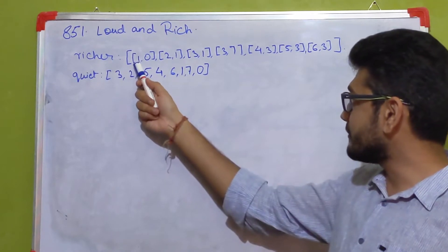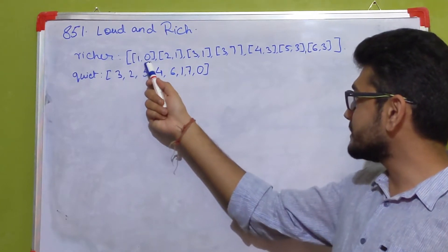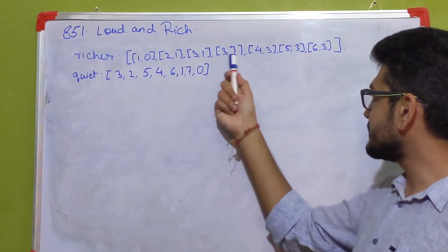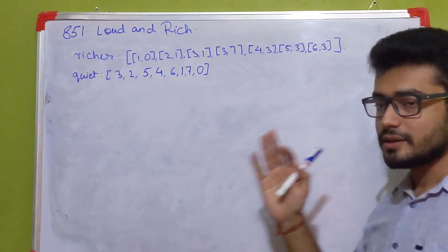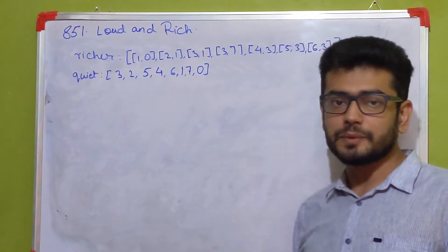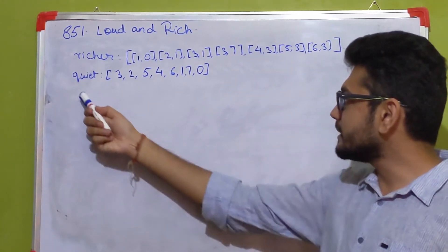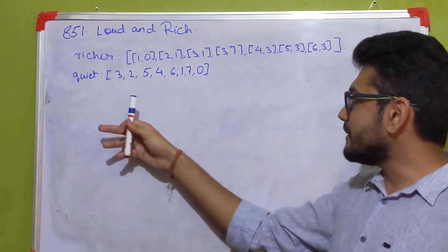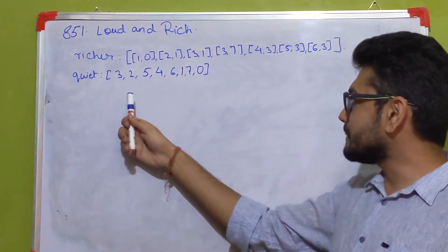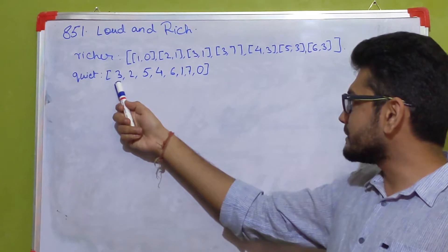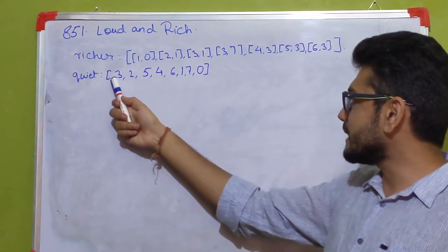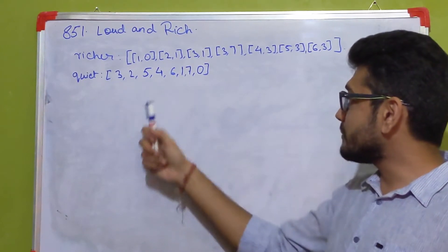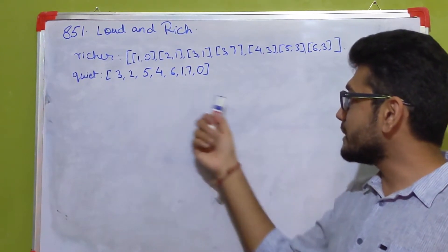For example, 1 is richer than 0, 2 is richer than 1, 3 is richer than 1, 3 is richer than 7, and so on. The other piece of information given to you is the quietness levels — the level of quietness that a person has. For example, the 0th person has a quietness level of 3, the 1st person has a quietness level of 2, and so on.